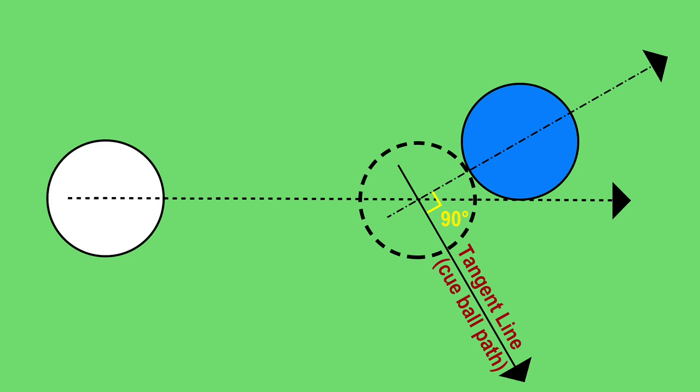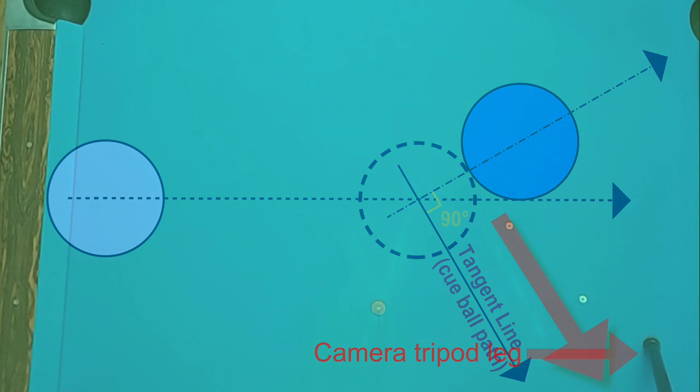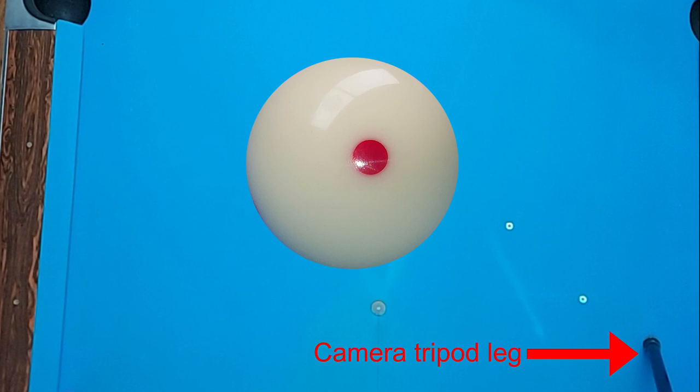First a quick refresher. The tangent line is a vector 90 degrees from the shot line to the opposite side of the cue ball's approach. I will repeat the same shot while striking the cue ball along the vertical axis, in the center, low and high, and at 4 different speeds for each location.